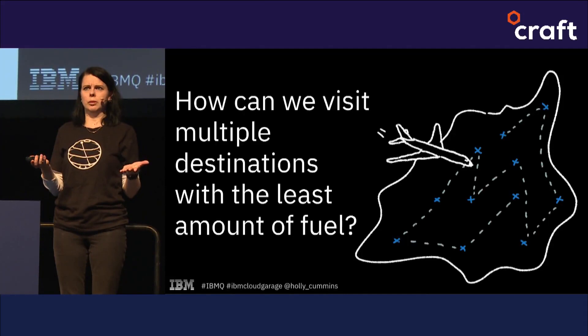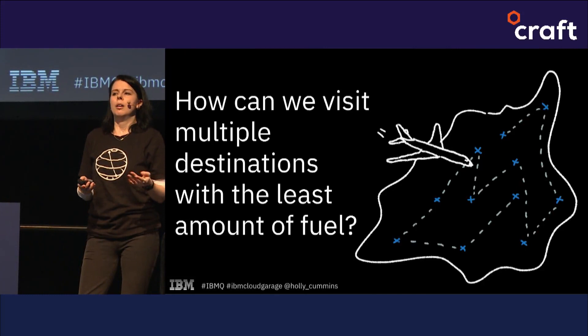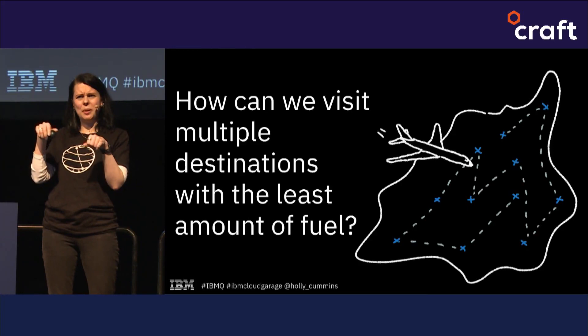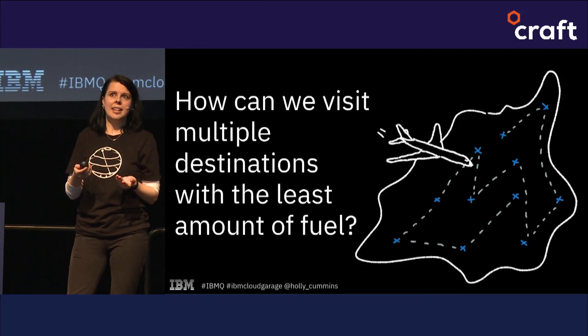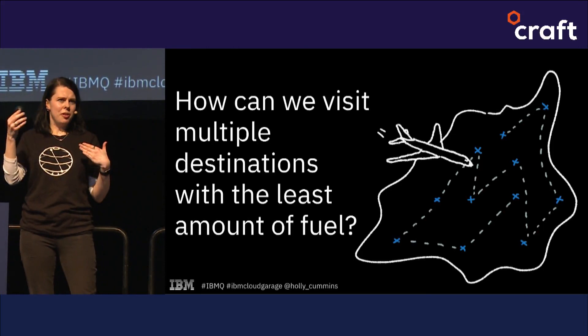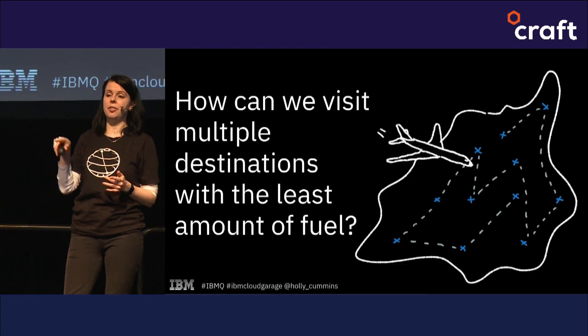I want to talk about a problem that seems really simple — a classic computer problem called the traveling salesman problem. When it was first thought about, it was a long time ago, and it was this quaint little idea that you'd have salespeople going from door to door. We don't really have salespeople going from door to door anymore, but this problem is still really relevant, because now we have Amazon sending parcels from door to door and airlines — the amount of logistics is huge. The question is: if I've got maybe ten destinations on a map, how can I visit those destinations most efficiently?